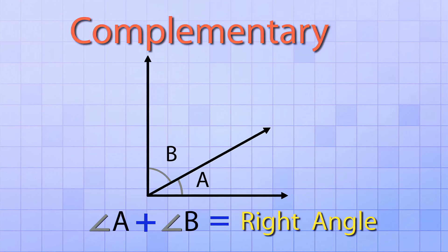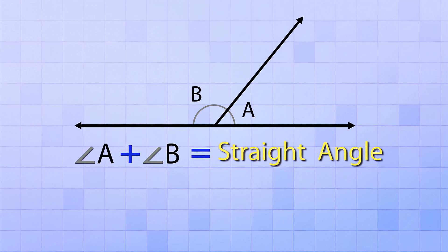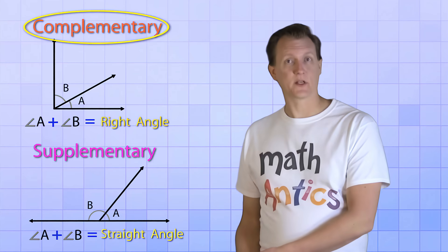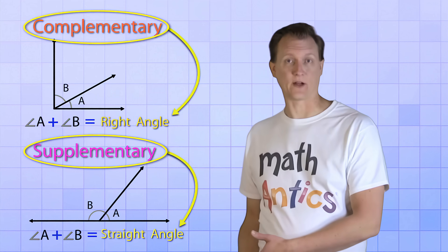And we can do the same thing with a straight angle. If we take a straight angle made from two rays and divide it with a third ray, two new smaller angles are formed. And those two angles combine to form a straight angle. We call these angles supplementary angles. So complementary angles combine to form a right angle, and supplementary angles combine to form a straight angle.